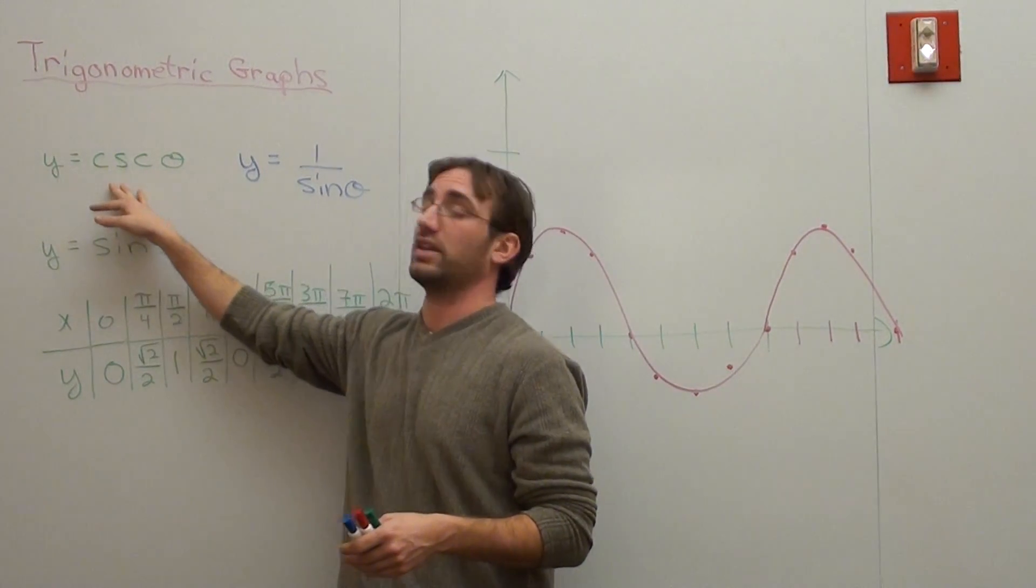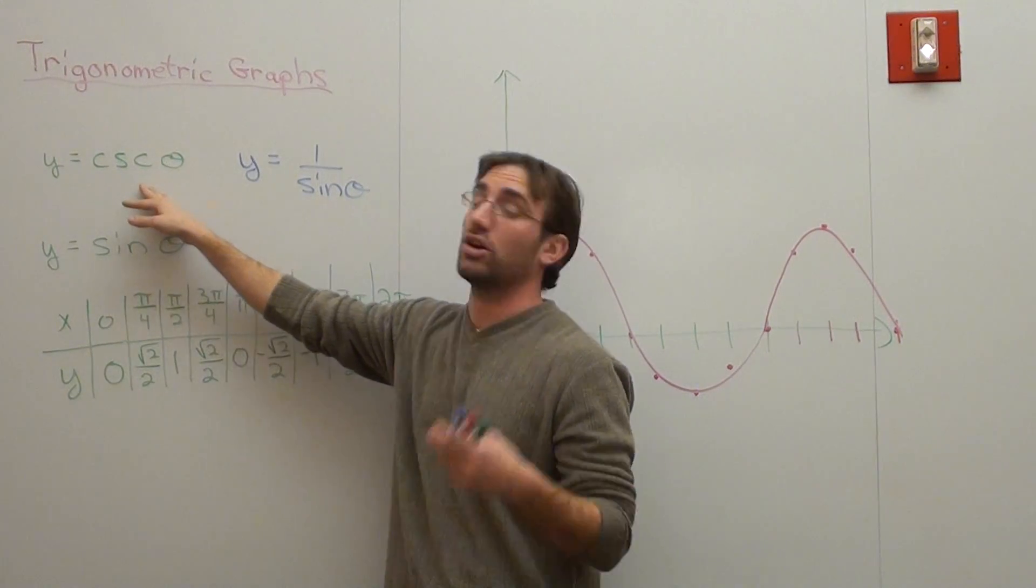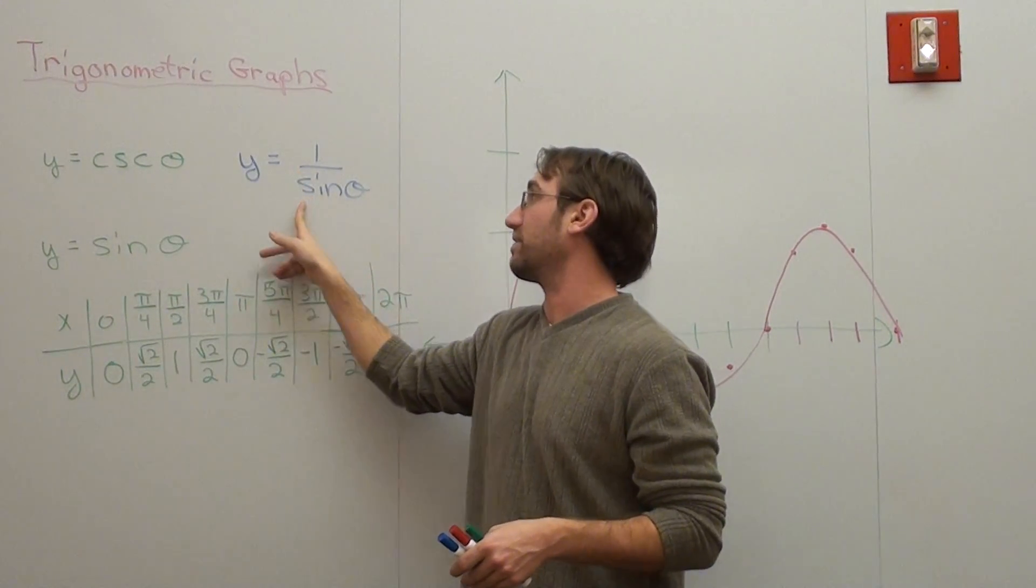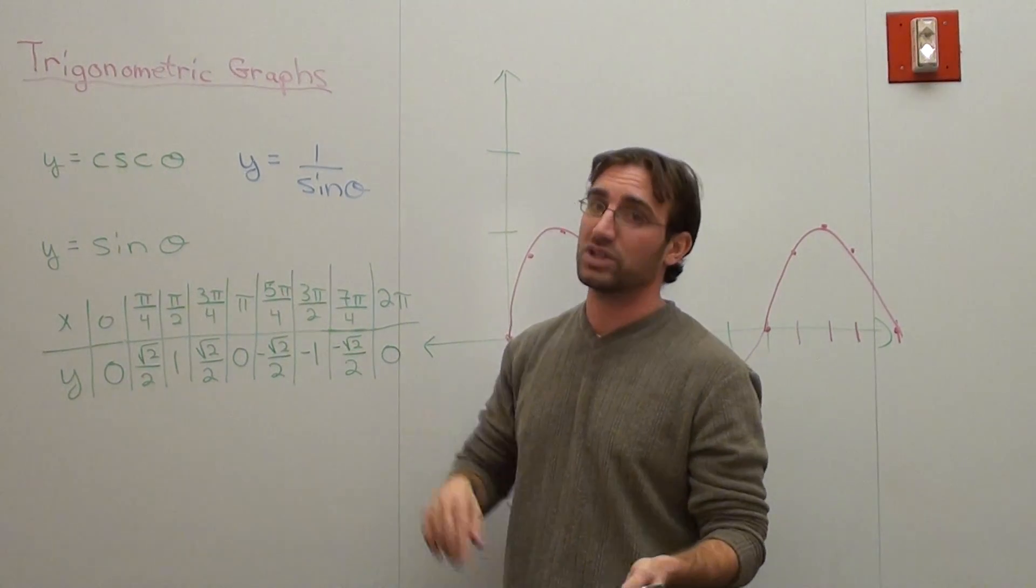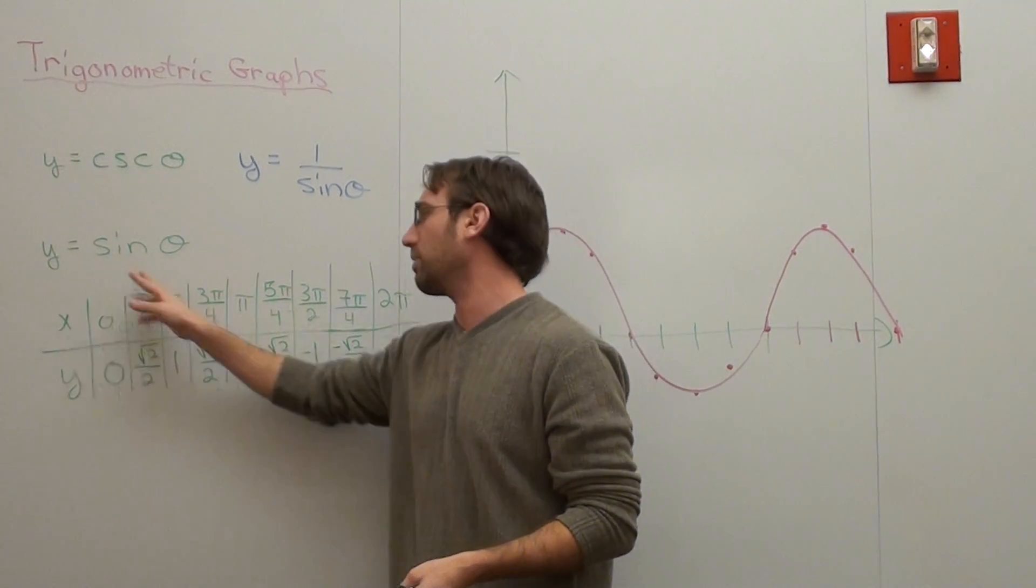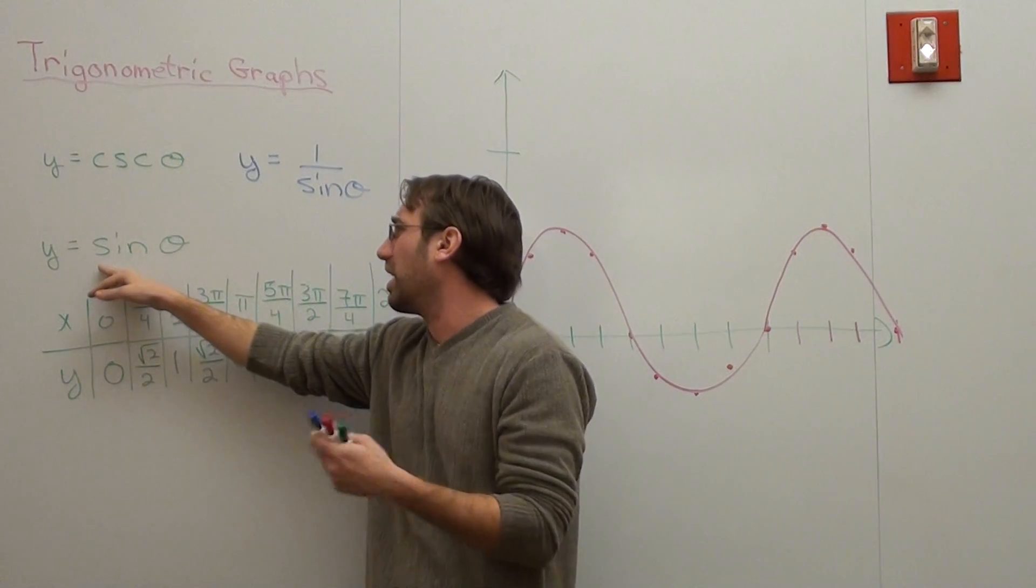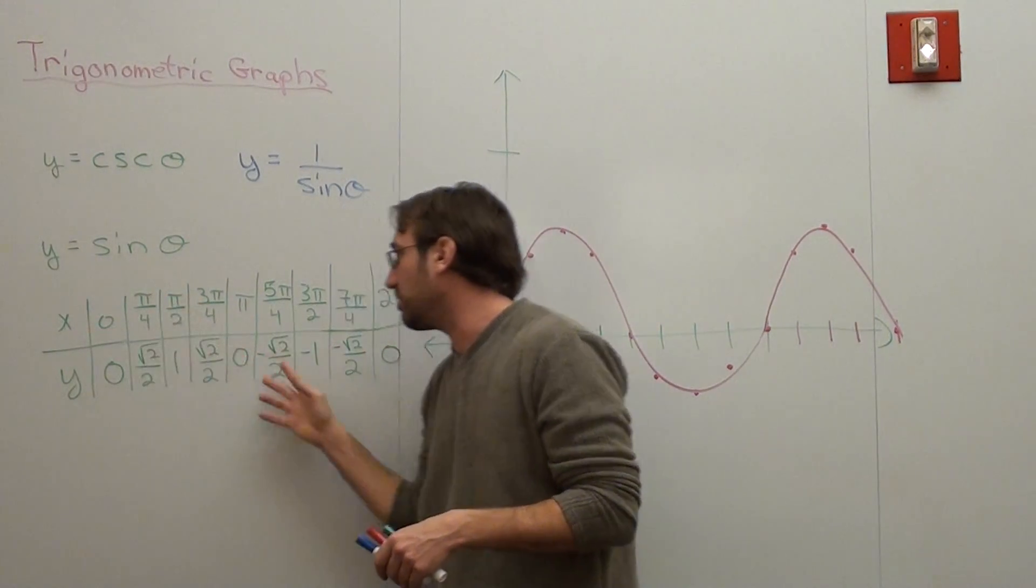What I want to talk about is its relation to the cosecant of theta. Basically, the cosecant of theta can also be written as one over the sine of theta, so it's its reciprocal function - not its inverse, its reciprocal. I went ahead and wrote y equals the sine of theta and made myself a table very similar to what I did in the previous lessons.